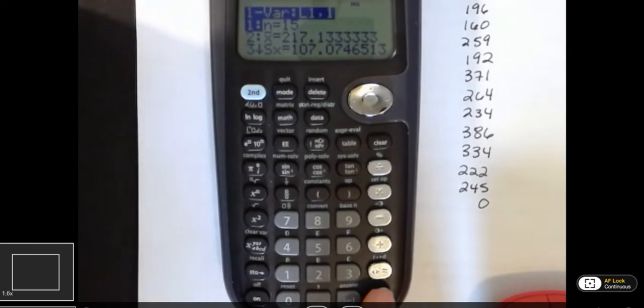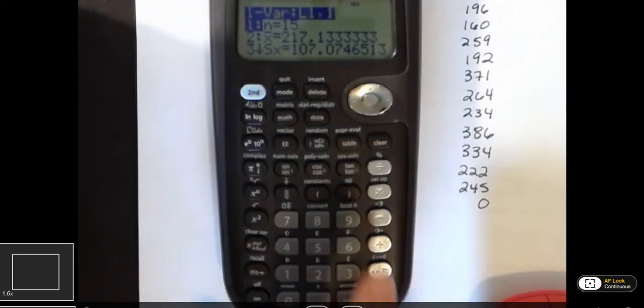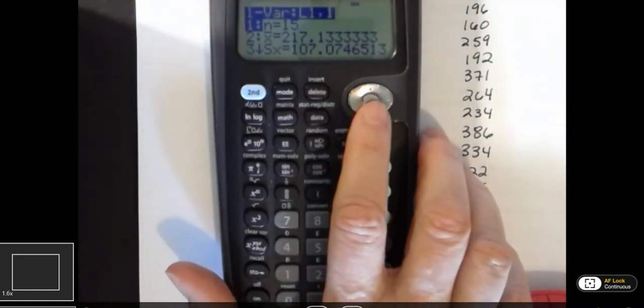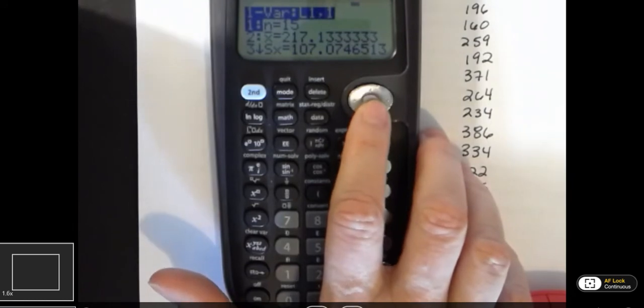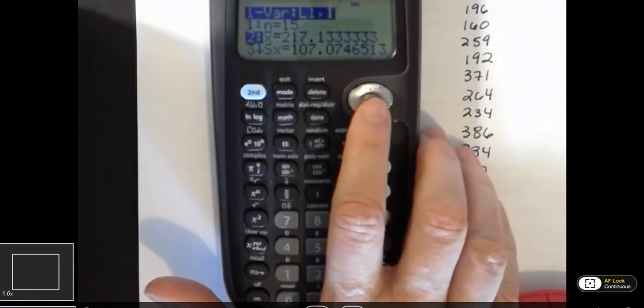Now, what it calculates is all these things. And some of these, you may not know what they even are, but this is what you're going to get. And you need to be able to find what you need out of there. N equals 15 means that 15 data values were entered. That X bar is the mean,